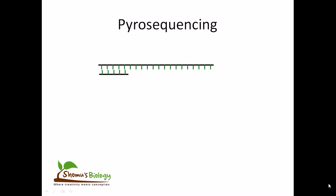In this animation we'll be learning the process of pyrosequencing. Pyrosequencing is based on the generation of a light signal through release of pyrophosphate, or PPi, on nucleotide addition. As each nucleotide is added it will generate some light. Depending upon the intensity of light we can determine the type of nucleotide that is added, and that's how we can sequence the DNA.